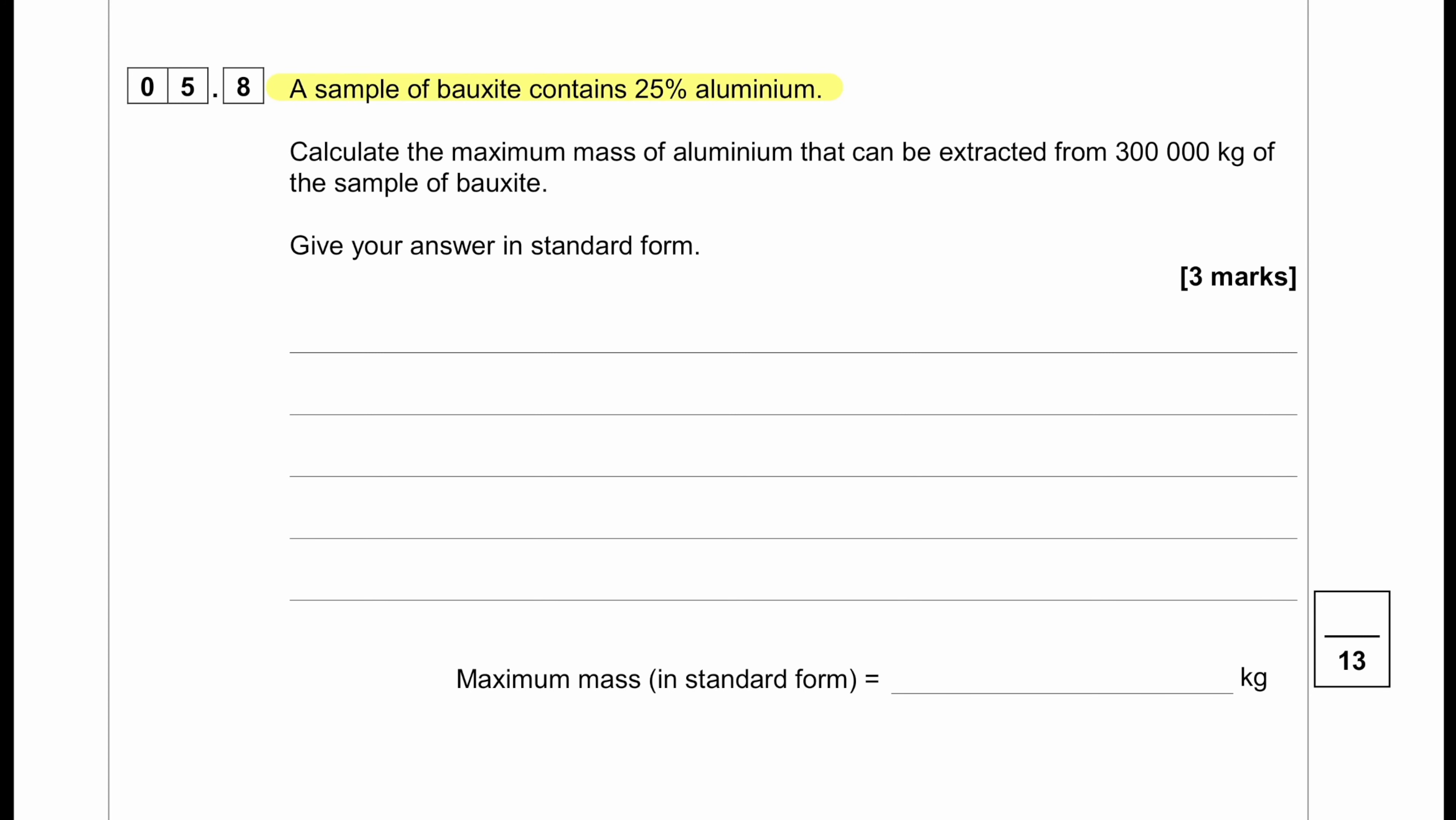A sample of bauxite contains 25% aluminium. Calculate the maximum mass of aluminium that can be extracted from 300,000 kilograms of the sample of bauxite. Give your answer in standard form. So it contains 25% aluminium. So what we can do is we can make the 25% as 25 divided by 100, and then we are going to multiply it with 300,000, the mass of the sample. This gives us a value of 75,000 kilograms. Since the answer is in standard form, so we can write 7.5 times 10 to the power 4.